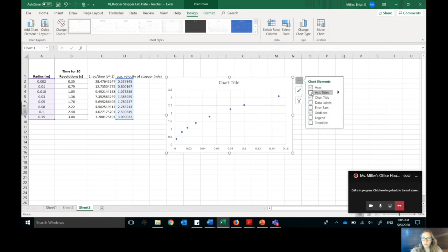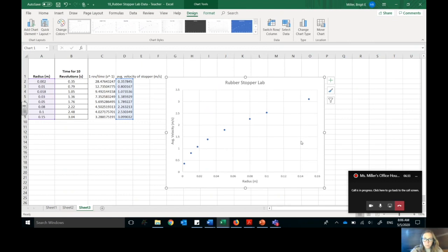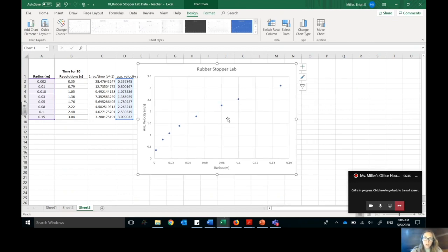So we can just say okay there. And here's that graph. Let's add some titles so that we keep in mind what we're graphing. We have the radius in meters and the average velocity. The reason I'm saying average is because it could be changing its speed slightly as it's going in that circle, but really we're taking the average if we're looking at the whole circumference. And then I'm just going to title it the rubber stopper lab.